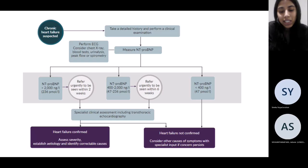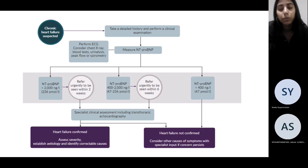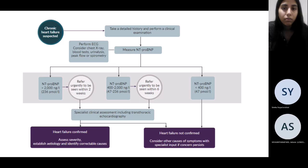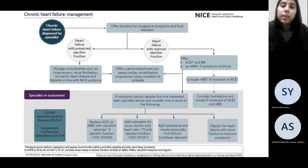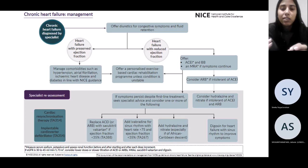This chart from the NICE clinical knowledge summaries is really useful. For exam purposes, know how quickly to refer patients: if in the GP setting a BNP comes back greater than 2000, that requires an urgent two-week wait referral — almost like a two-week wait cancer referral — because the morbidity of heart failure is quite high. Chronic heart failure management: always start ACE inhibitor and beta blocker, then add an MRA, then specialist additions like Entresto or hydralazine and nitrate for specific indications.